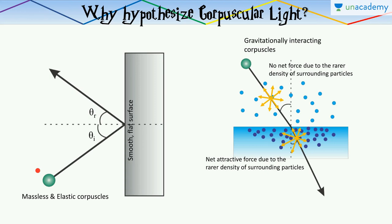So the reflection of light is being explained by the corpuscular model. What else can it explain?